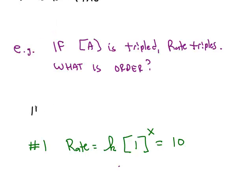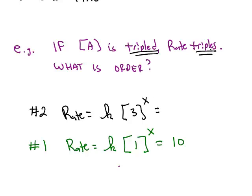So the second time I do this, the rate is still equal to the same rate law, but the amount of A is tripled, so instead of 1 to the x, we're going to have 3 to the x. And experimentally, we find that the rate triples, so instead of 10, the rate will be 30.